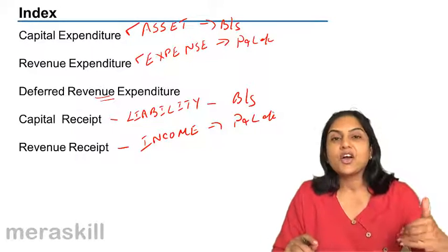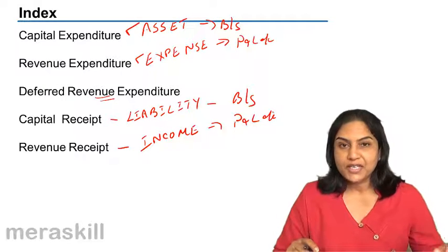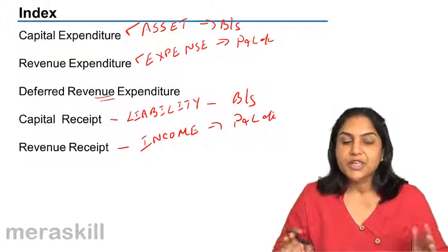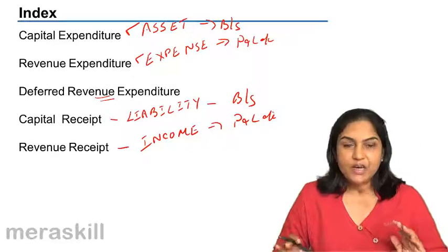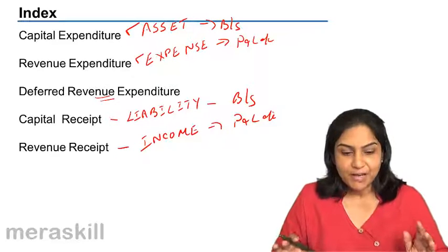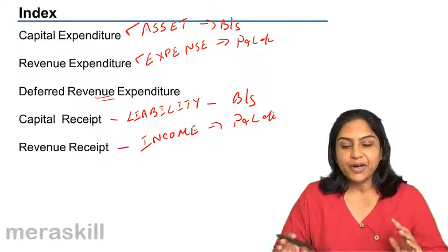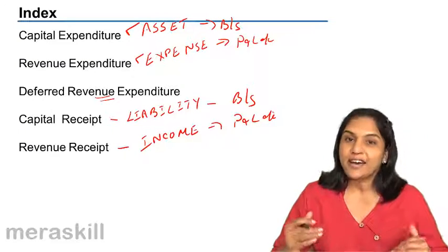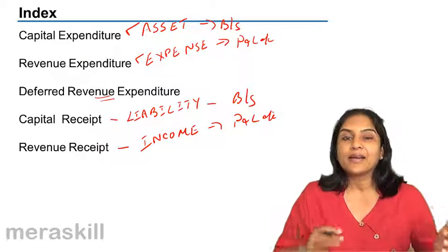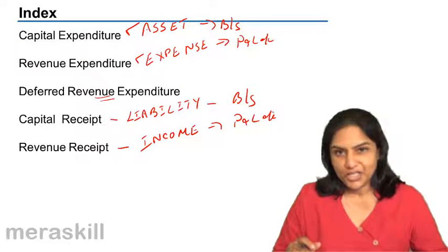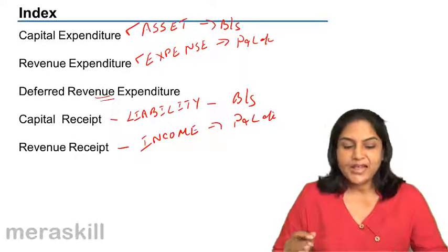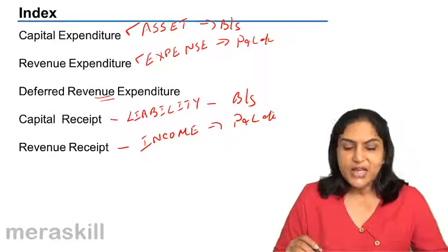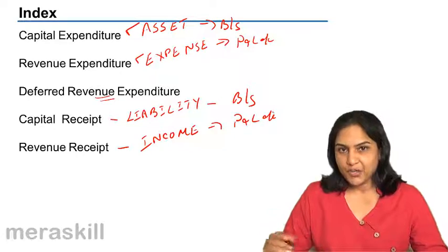This is the order in which we will go. We will first understand capital expenditure with examples, then revenue expenditure with examples, then deferred revenue expenditure — which is revenue in nature but treated like a capital expenditure — and then capital receipts and revenue receipts with examples.